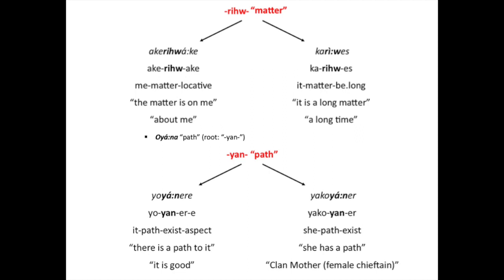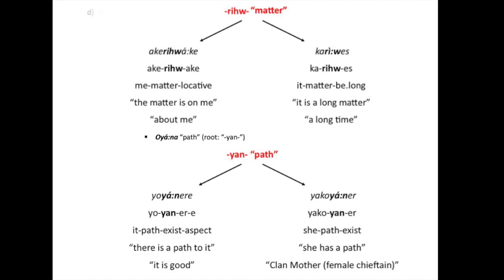The fourth and final word is 'ojana,' meaning path, which is found in 'yojanaere' (there is a path to it, it is good) and 'jagojanaer' (she has a path) — meaning clanmother, a female chieftain.